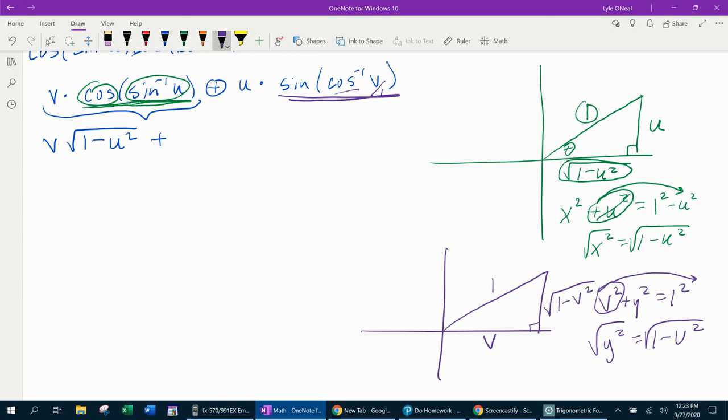Now I can calculate this expression because we're doing sine of this angle. Sine is y over r, which would be square root of one minus v squared over one. But anything over one is itself. So then this would be u times the square root of one minus v squared.